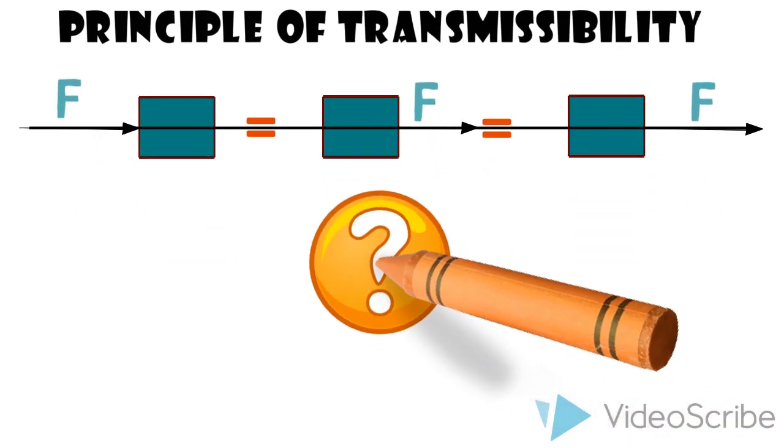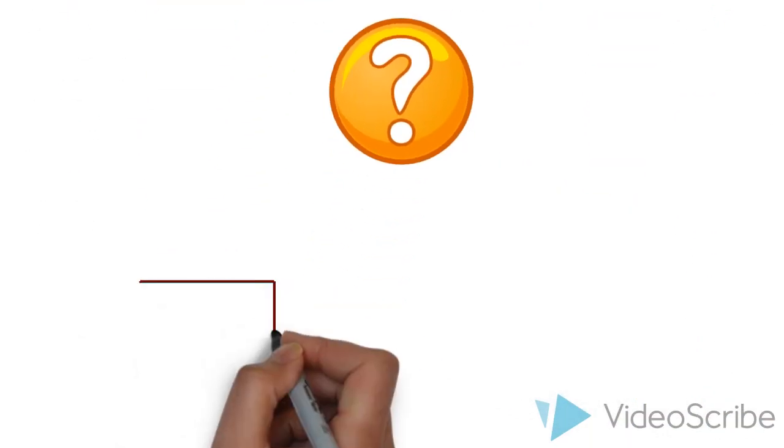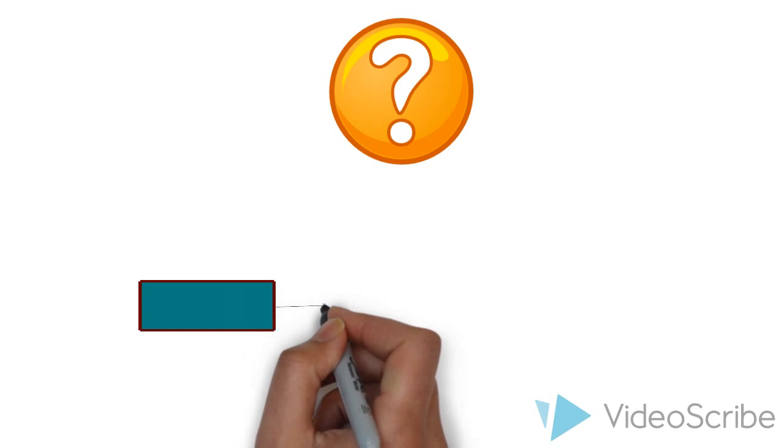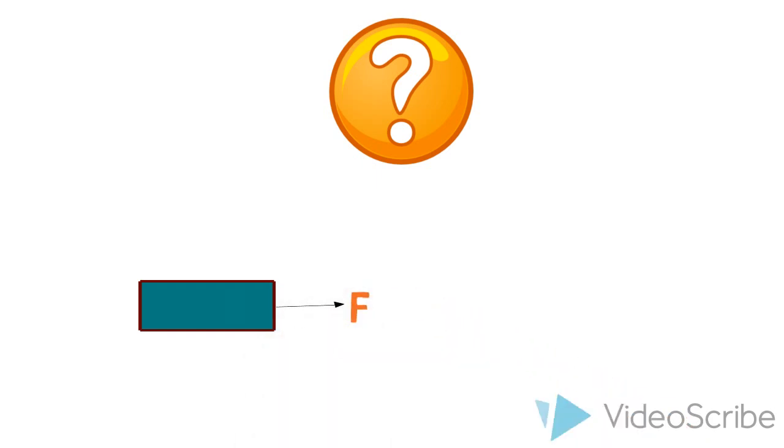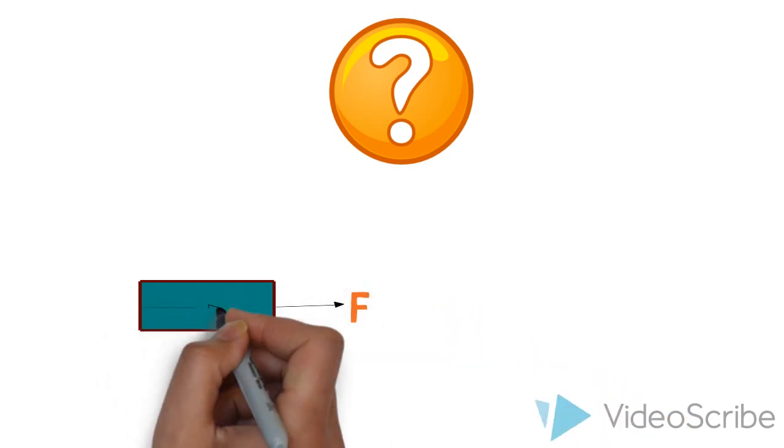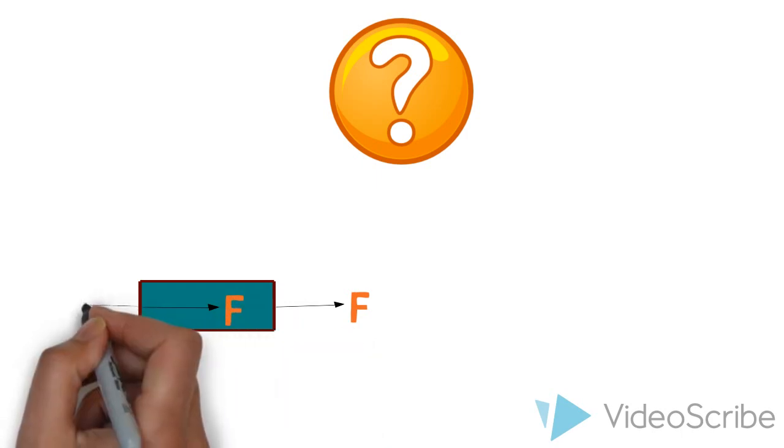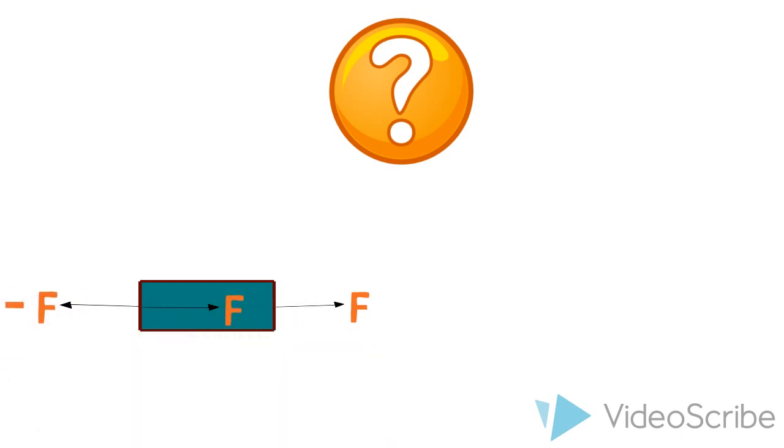So why does this work? Refer again to a block with a force F applied to its right side. Attach a pair of equal but opposite forces at its left side in the line of action of F.